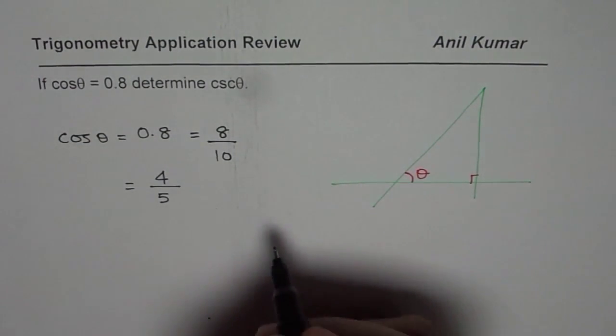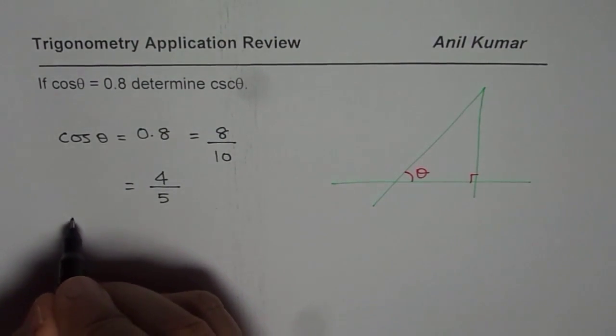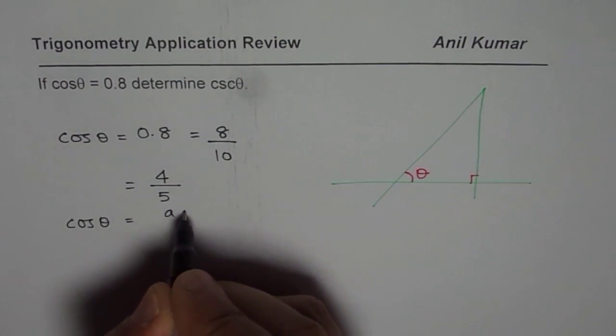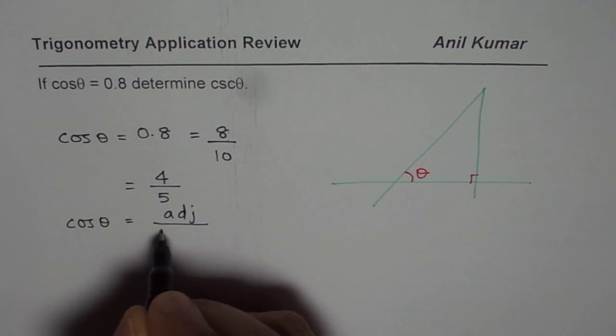This is one thing. Second part which you understand is, what is cos θ? Cos θ is adjacent side over hypotenuse.